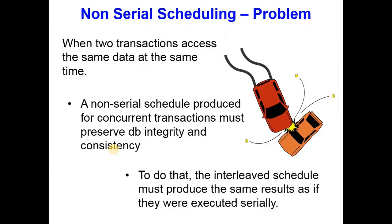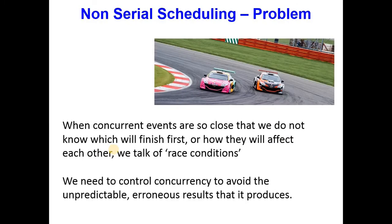A non-serial or concurrent interleaved schedule should produce the same results as a serial one. Sometimes people talk about this as race conditions — imagine two cars racing each other. Which transaction arrives first depends on small technical details like the speed of the network. Those race conditions make it really difficult to control concurrency. If many different users are accessing the same information at the same time, you don't know which transaction will run before which, and the errors that result are very difficult to work out.